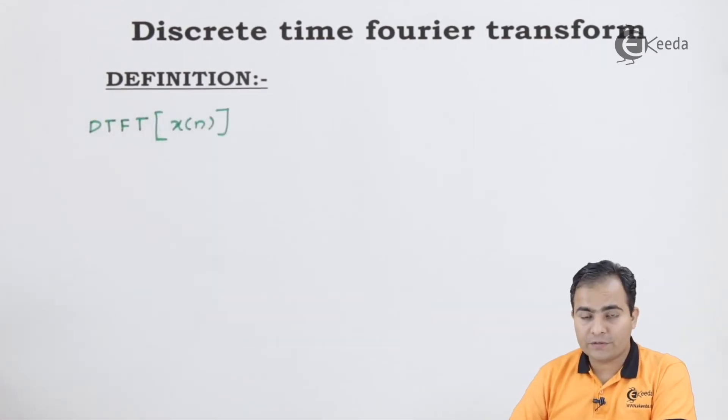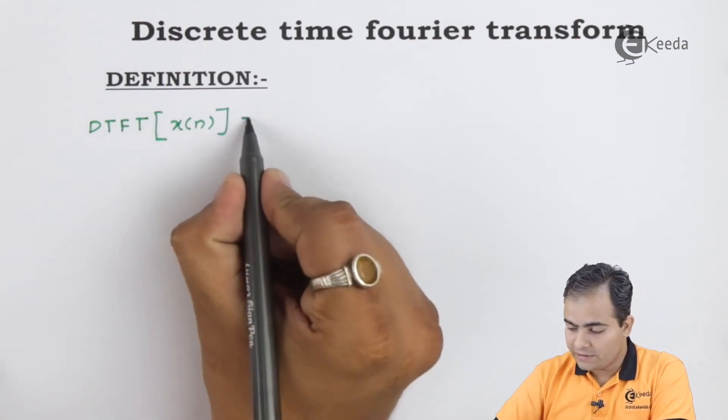Discrete time Fourier transform of x of n is a periodic signal and it has finite energy. If it satisfies both these conditions, then we can easily obtain the DTFT of the given sequence, and it is represented by x of omega.